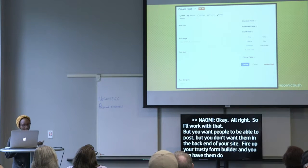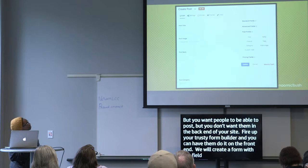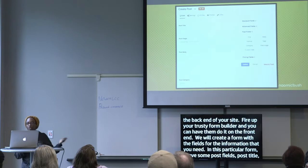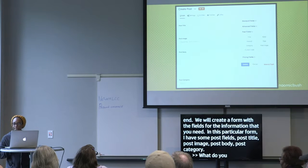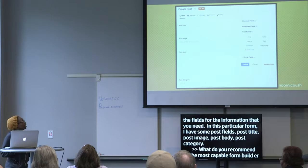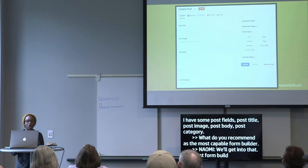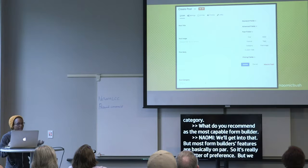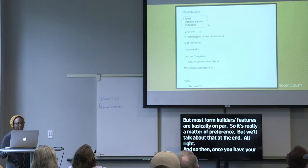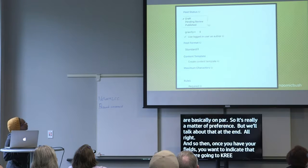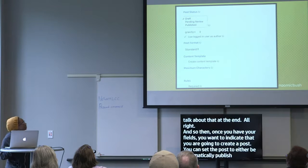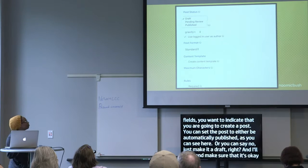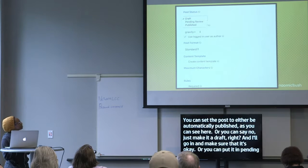We're going to create a form with the fields for the information you need. I have post fields: post title, post image, post body, post category. Once you have your fields, you indicate that you're going to create a post. You can set the post to either be automatically published, or set it as a draft for review, or put it in pending review — any of the post statuses available.